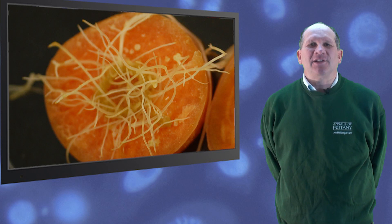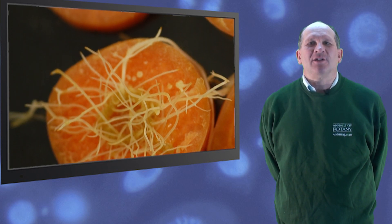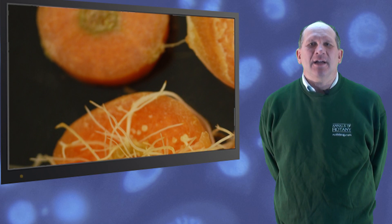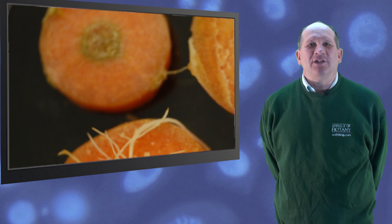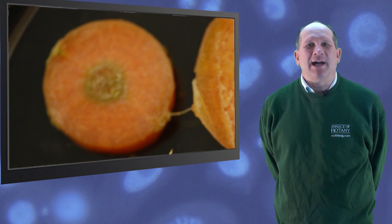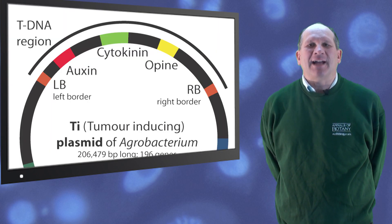The third strain of Agrobacterium that we used was similar to the wild type T37, but it had the genes for hormone production removed. This meant that although the Ti plasmid DNA was transferred into the carrot cells, it didn't actually cause any production of the extra hormones.